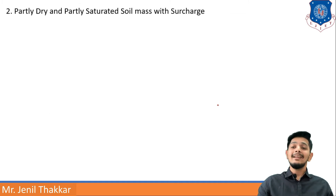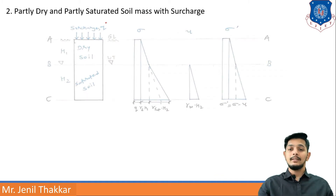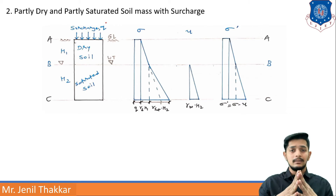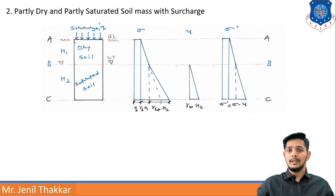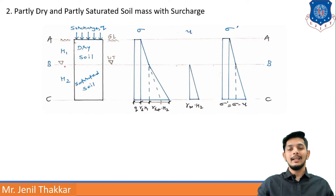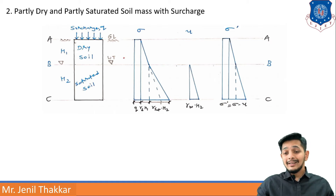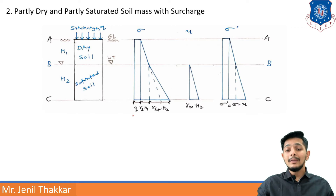Second case: partly dry and partly saturated soil mass with surcharge. In this case, surcharge is the extra element. Surcharge is simply some extra weight on the soil. The figure is the same as the previous case but with surcharge Q added on top. This Q will exert additional pressure. There is dry soil, saturated soil, and water table at the same heights. For total stress, a rectangle appears in the pressure diagram due to surcharge Q because it is a uniform load, uniformly distributed over the total depth of the soil.